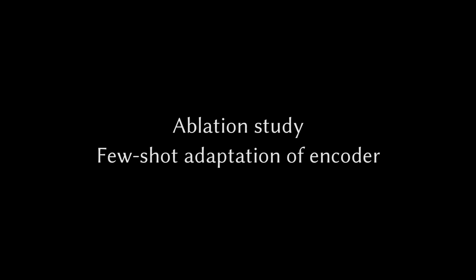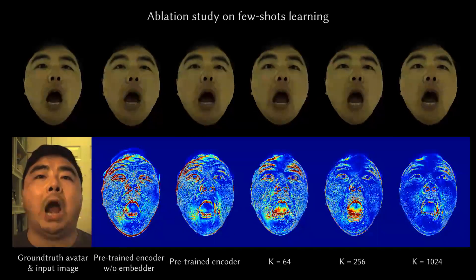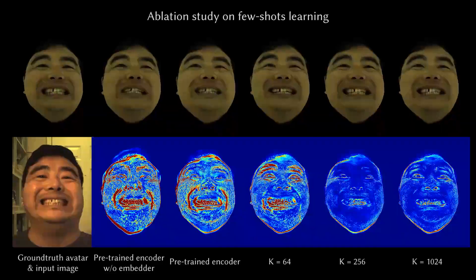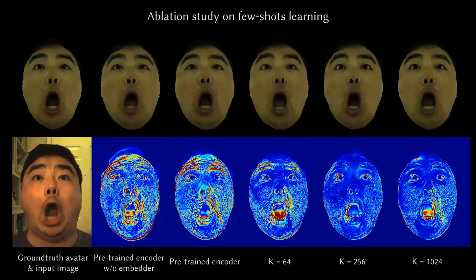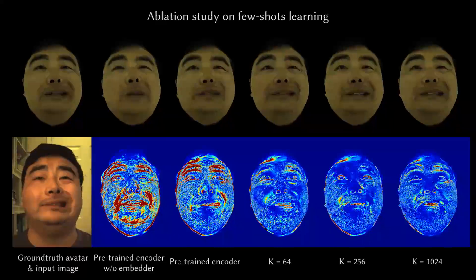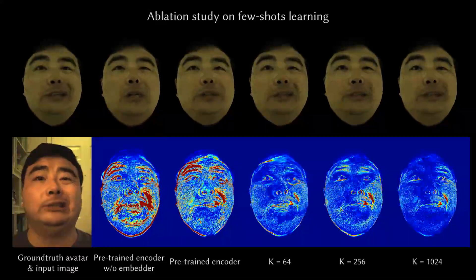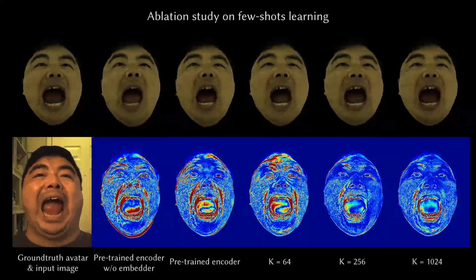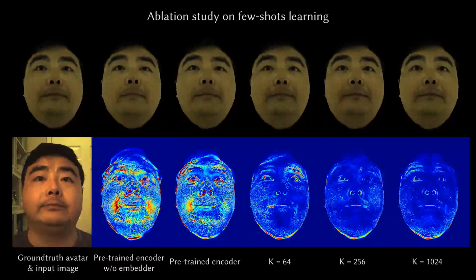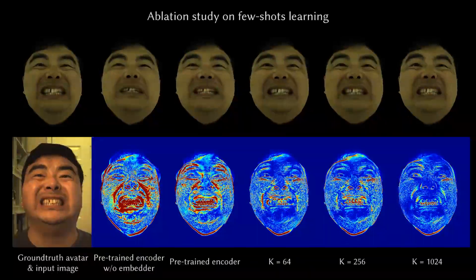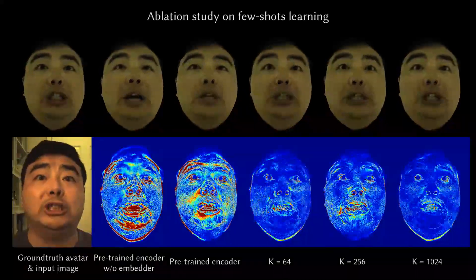A critical challenge for our method is the adaptation of our trained person-specific encoder to a new lighting scenario. When directly applying our encoder to a test video with new lighting conditions, we fail to transfer the user's facial expression. To solve this problem, we propose a few-shot learning-based domain adaptation method. We uniformly sample k frames from a test video and adapt the encoder. This adapted encoder helps recover the correct facial expressions.